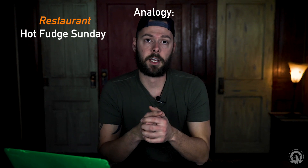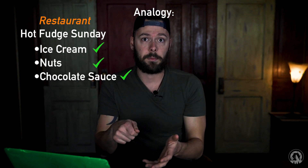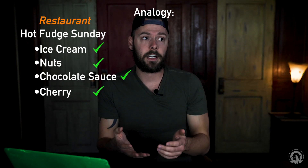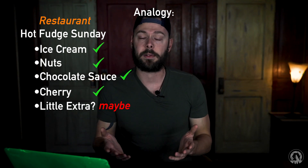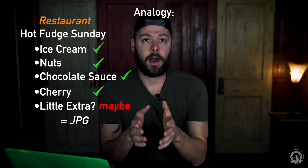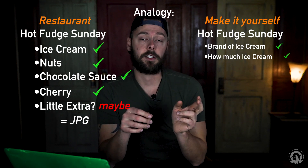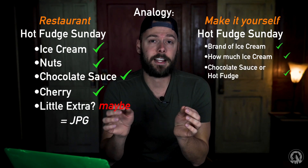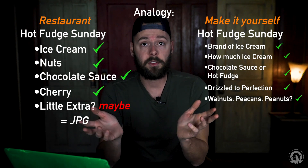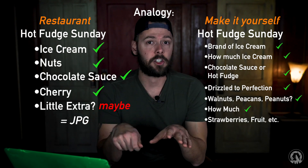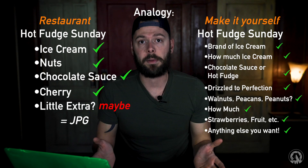Let's say you're at a restaurant and you order a hot fudge sundae. They bring you one with ice cream, nuts, chocolate sauce, maybe a cherry. You might be able to get a little extra ice cream or a little extra hot fudge, but your choices are very limited — you kind of get what you get. That's JPEG. Now let's say you make it yourself. You get to choose the brand of ice cream, how much you want, chocolate sauce or hot fudge and exactly the amount drizzled to perfection. You choose walnuts, pecans, peanuts, whatever you want and how much. If you want slices of strawberries, you put slices of strawberries on it and you make it exactly how you want it — there's really no limits. That's RAW.